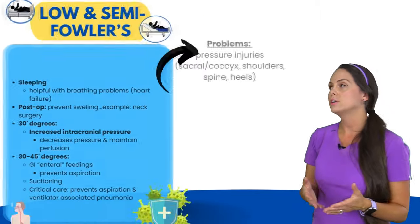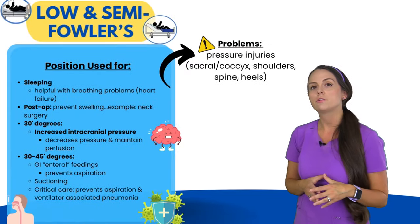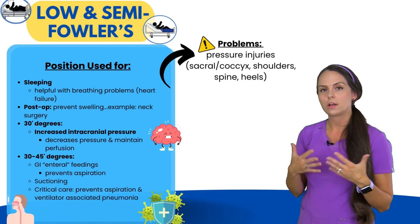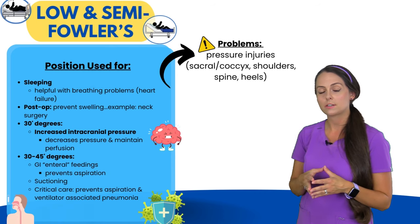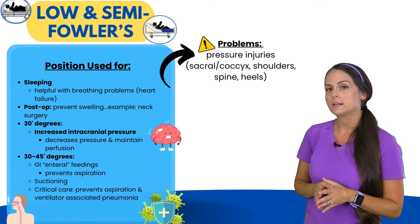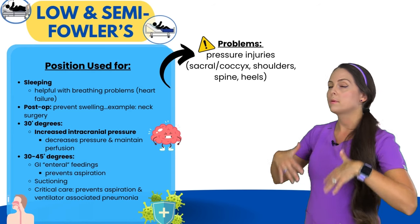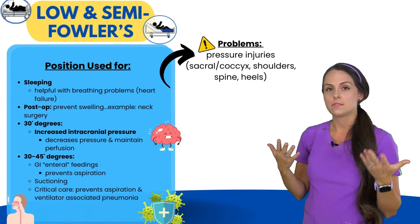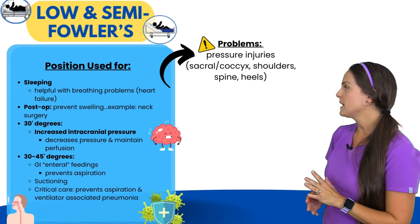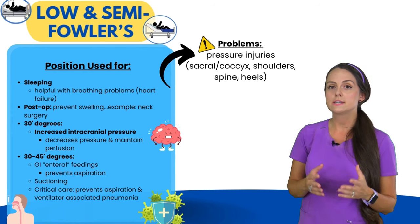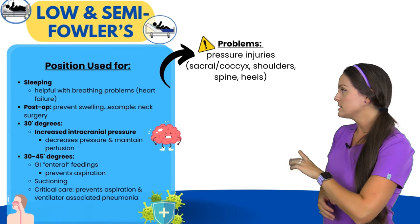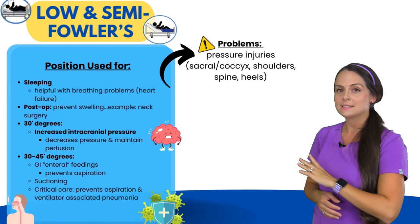These positions are used for sleeping, and they're especially beneficial for patients who have breathing problems like heart failure, because there's so much fluid backing up and putting pressure on the heart and lungs — it makes it easier for the patient to breathe at an angle when resting. They can also be beneficial during the post-op period to prevent upper body swelling, such as after neck surgery. When talking about the 30-degree position, we want the patient at least at 30 degrees if they have increased intracranial pressure, because the head-of-bed elevation helps decrease intracranial pressure and maintain perfusion to the brain.